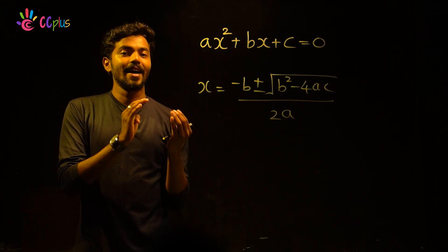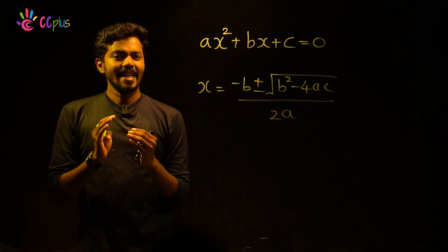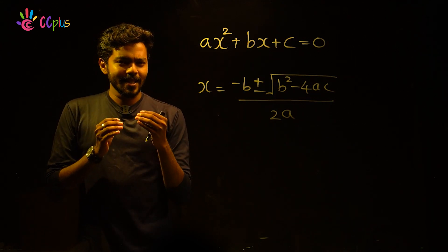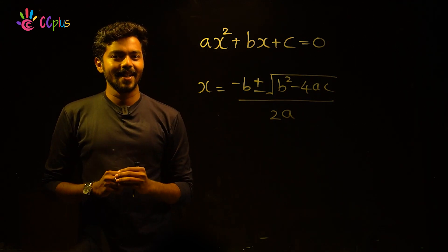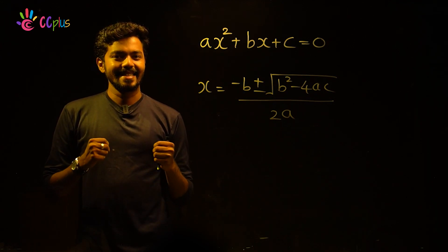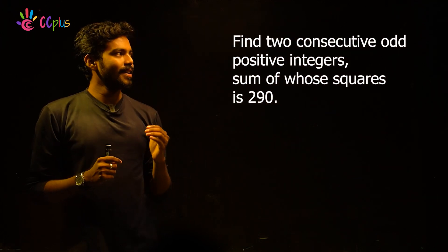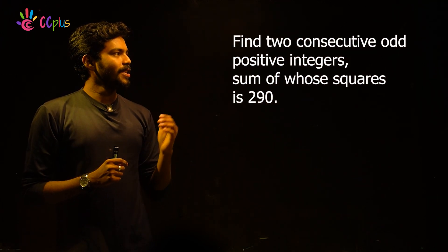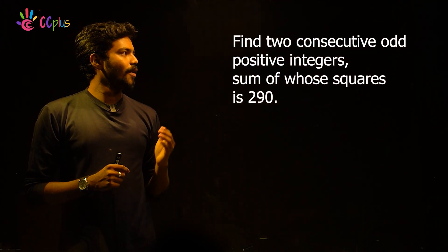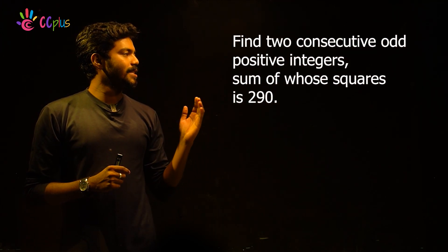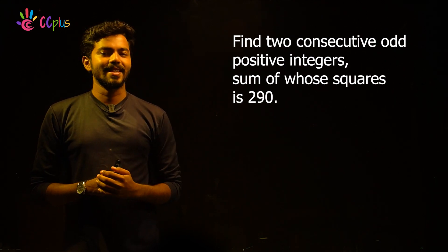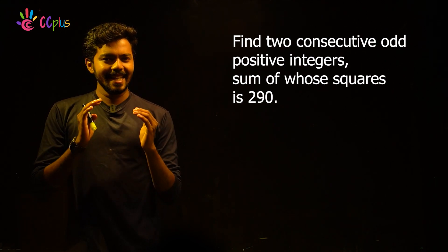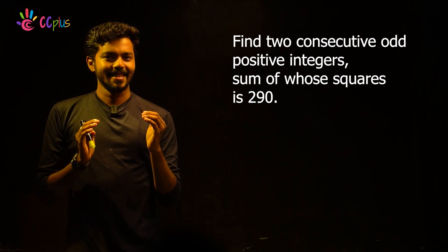We have a variable value. Now we have a problem: Find two consecutive odd positive integers such that the sum of their squares is 290.